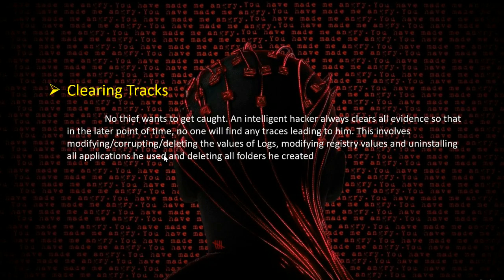The last stage is clearing the tracks, because no thief wants to get caught. An intelligent hacker always clears all evidence so no traces lead back to them. This involves modifying, corrupting, or deleting log values, modifying registry values, uninstalling all applications used, and deleting all folders created. There is no particular tool defined for clearing tracks — it solely depends on the attacker and the methods and tools they used to gain access.